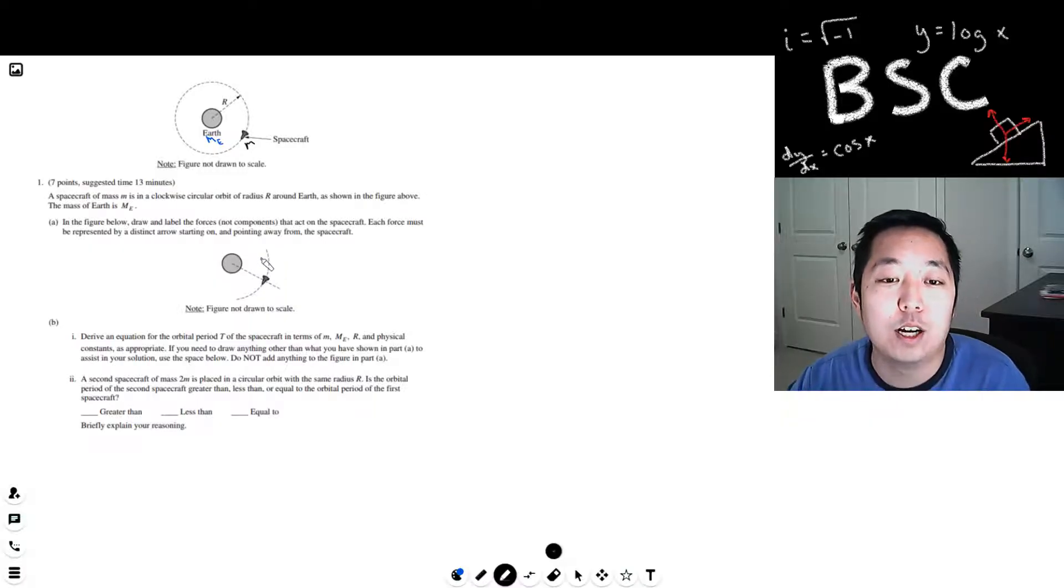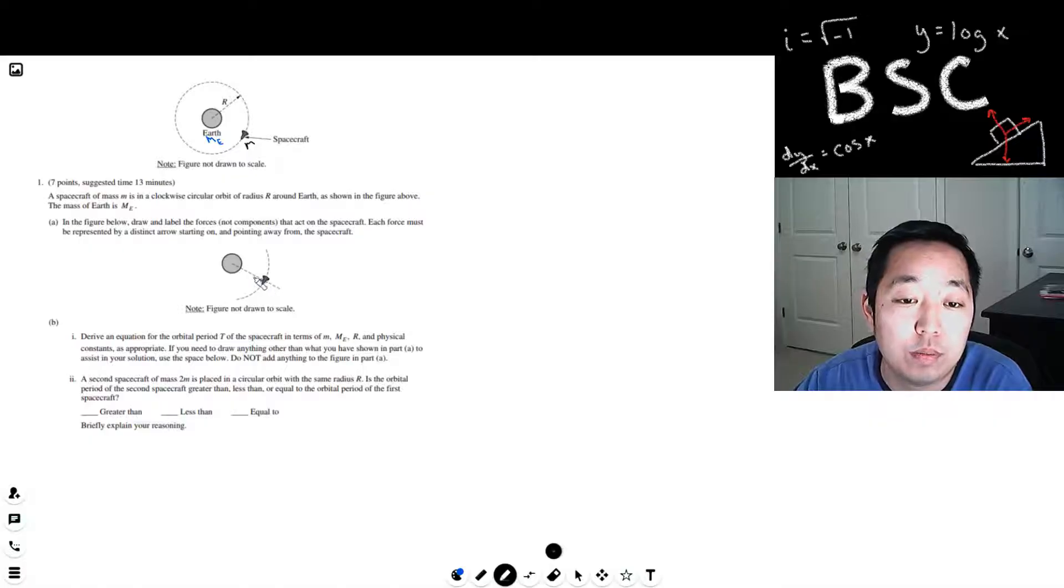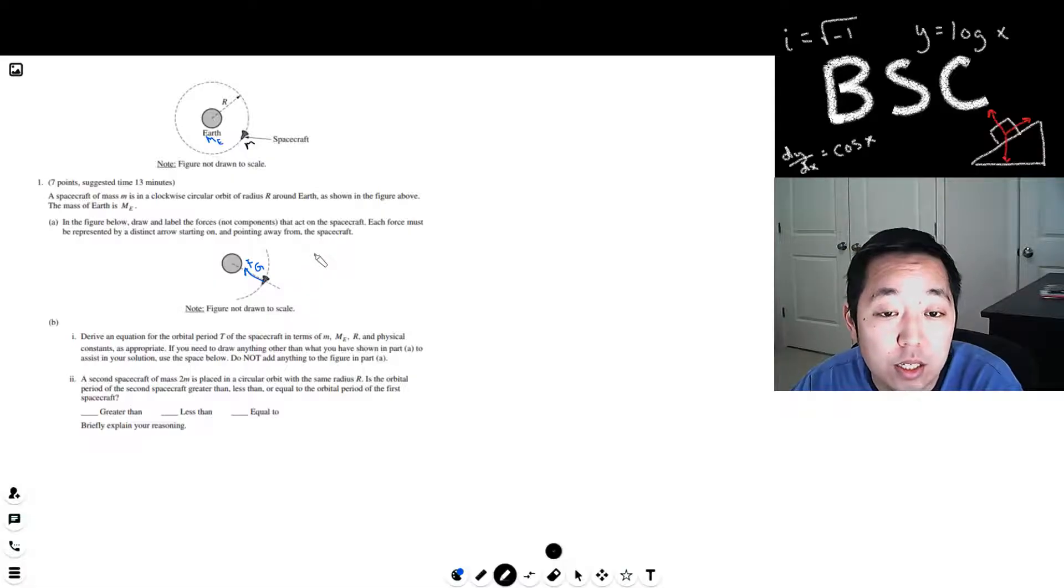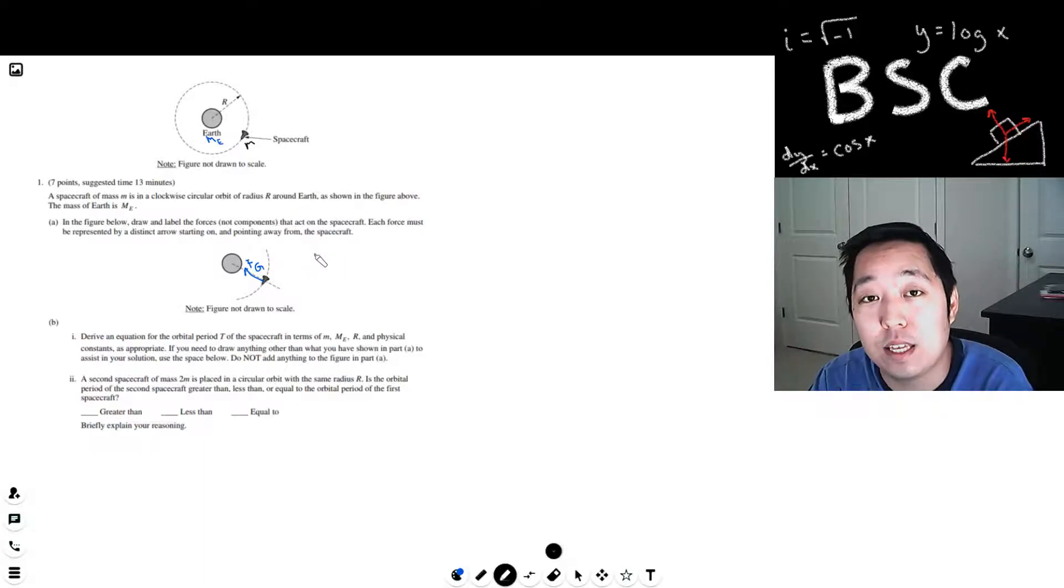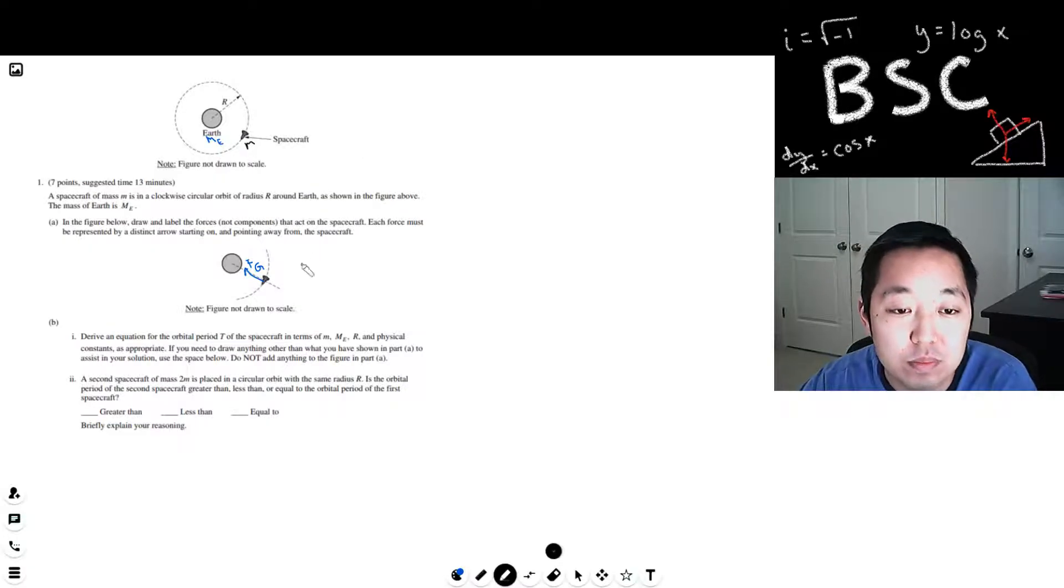The only thing that's acting on the spacecraft is gravity from the Earth. That's it. No other forces. No wind resistance, nothing pushing on it. There's no such thing as a centripetal force per se. That's not a force. It's the gravity that's acting as a centripetal force. There's no other kind of centripetal forces like pushing out or anything like that. So that's all we need.